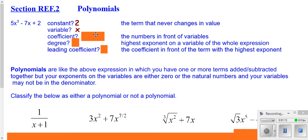Coefficients are the numbers in front of your variables. So, we would have a 5 and a negative 7 as our coefficients. Your degree is the highest exponent that shows up. And in this case, that would be a 3.